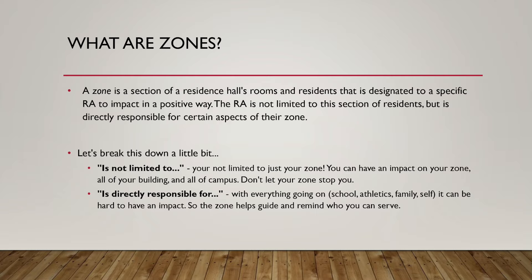the way it's broken down is you'd be responsible for — your zone would be the residents in your suite, 110, and also the suite right next to it, 120. So there are about 16 residents in each zone in a Hutton or a Kleist. But that's not just who you're limited to and who you serve or impact — it's who you're directly responsible for.